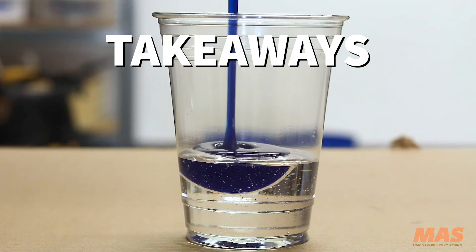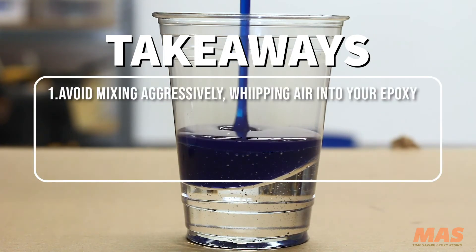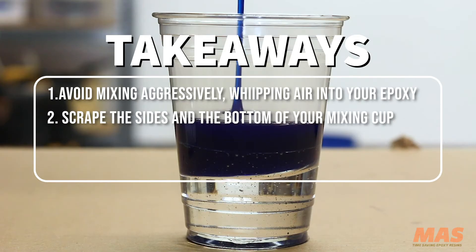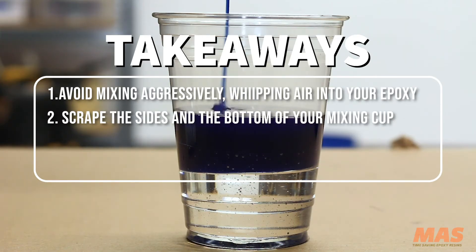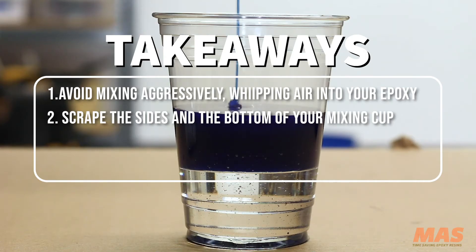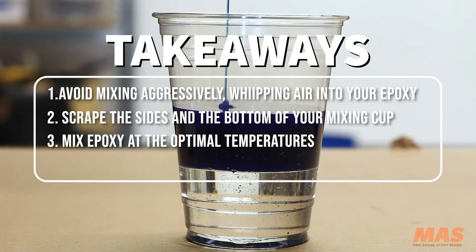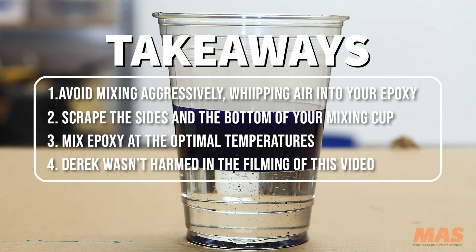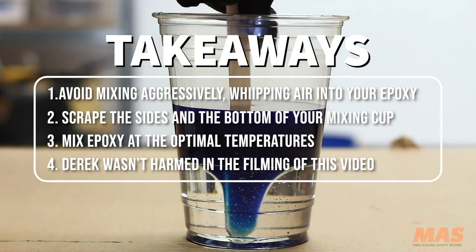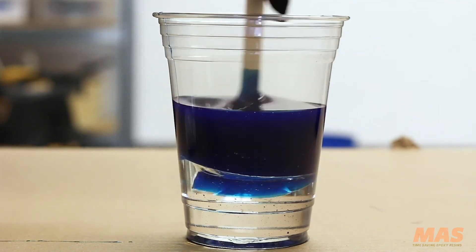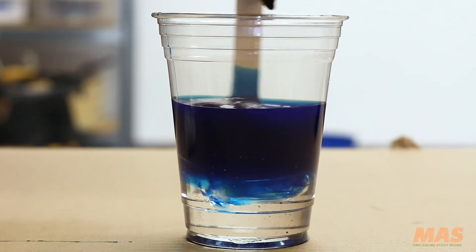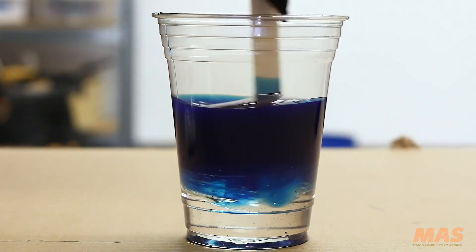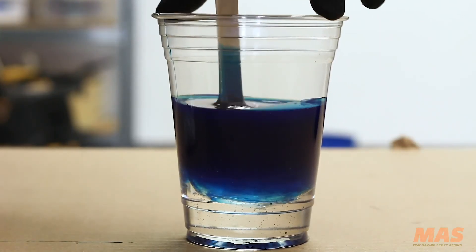All right, let's recap. What did we learn today? One: don't be a maniac and whip air into your epoxy. Two: scrape the sidewalls and the bottom of your container to ensure you have all part A and part B mixed together in solution. Three: make sure your air temperatures are optimal—70, 75 degrees—the warmer it is the easier it's going to be to mix and easier it's going to be to release bubbles. Four: sometimes we abuse Derek when we're shooting these videos and it is awesome. That about wraps it up for us, guys. As always, thank you for checking out our videos. If you have any questions, comments, or you want us to create some videos because we're lacking information or you just want a bigger knowledge base, let us know. We'd love to do it. Have a good one, talk to you later.